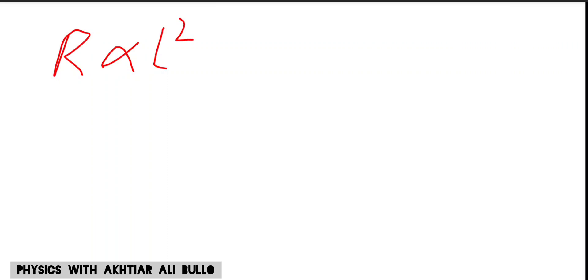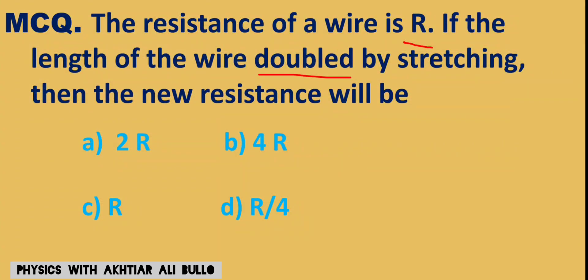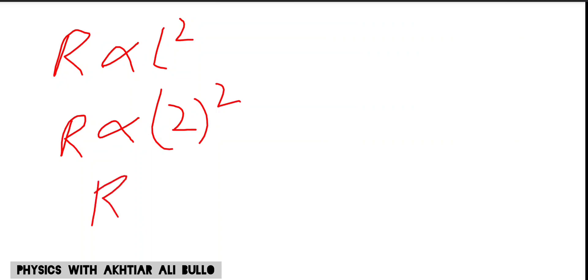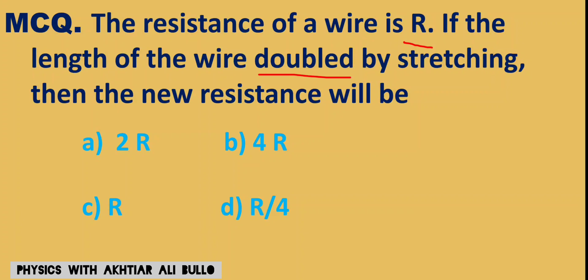when the length of the wire is doubled, the resistance will be proportional to the square of 2, which gives 4. So when the length of the wire is doubled, the resistance will be 4 times. Therefore, the correct option is B, 4R.